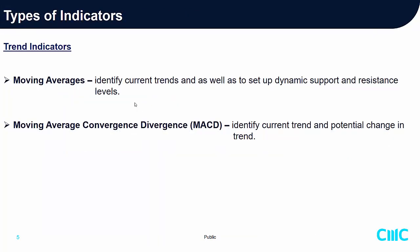Before I jump into MACD, what are trend indicators? There are two sets of indicators within the category of leading and lagging. Trend indicators include Moving Average, which I covered in Module 1 — they identify current trends and set up dynamic support and resistance levels. The next popular trend indicator is Moving Average Convergence Divergence — MACD in short — used to identify the current trend as well as a potential change in trend.